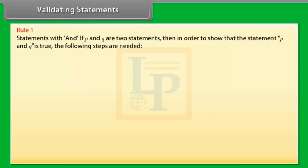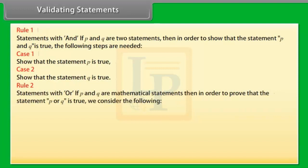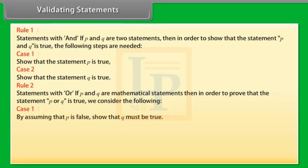Validating statements. Rule 1 — Statements with AND: To show P and Q is true, show (Case 1) P is true and (Case 2) Q is true. Rule 2 — Statements with OR: To prove P or Q is true, consider (Case 1) assuming P is false, show Q must be true; or (Case 2) assuming Q is false, show P must be true.